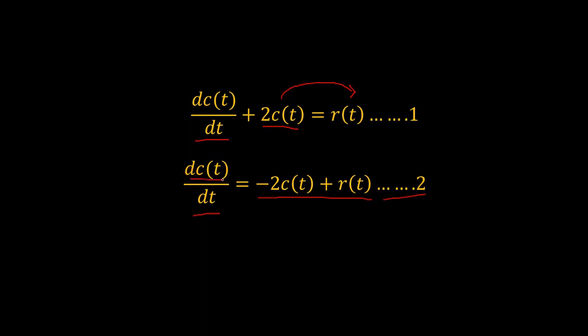Equation 2 states that the first derivative of the output, dc(t)/dt, is equal to the sum of negative two times the output plus the input.